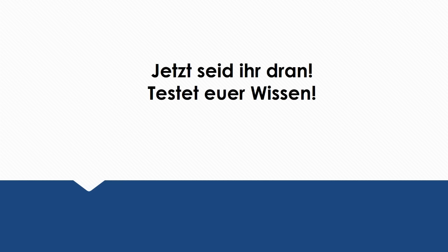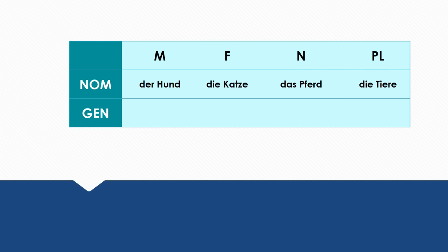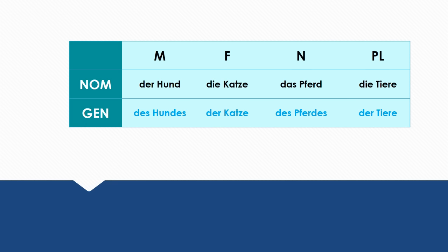Jetzt seid ihr dran — testet euer Wissen! Now it's your turn — test your knowledge. I will give you the nominative forms and you have to come up with the genitive forms. 'Der Hund' (the dog), 'die Katze' (the cat), 'das Pferd' (the horse), 'die Tiere' (the animals). The genitive forms are: 'des Hundes' (of the dog), 'der Katze' (of the cat), 'des Pferdes' (of the horse), 'der Tiere' (of the animals).